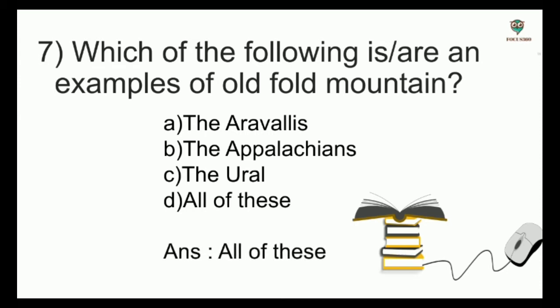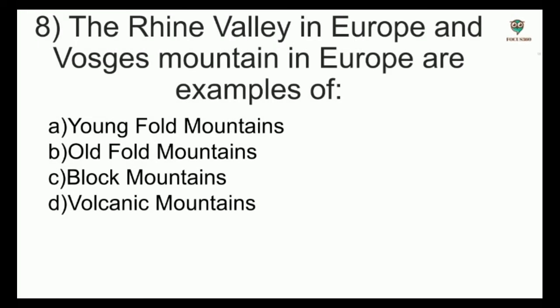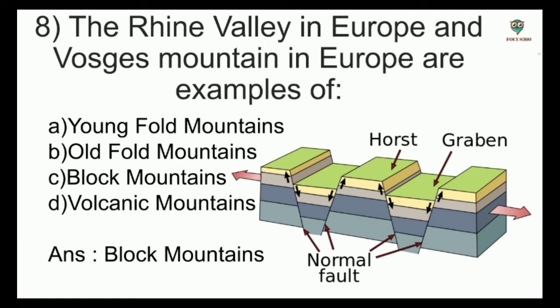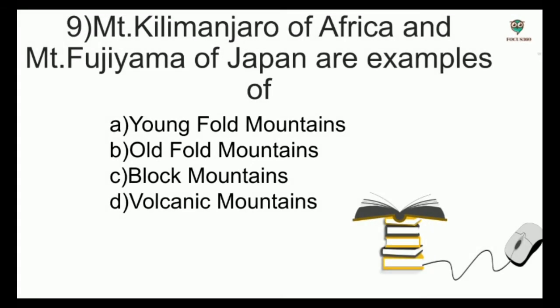The Rhine Valley in Europe and Vosges Mountain in Europe are examples of — options: young fold mountains, old fold mountains, block mountains, volcanic mountains — and the answer is block mountains. Block mountains are created when large areas are broken and displaced vertically. The uplifted blocks are termed as horst and the lowered blocks are called graben. Next, Mount Kilimanjaro of Africa and Mount Fujiyama of Japan are examples of volcanic mountains.